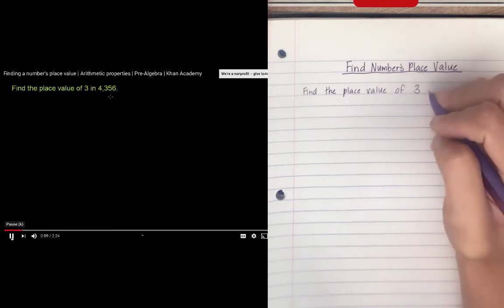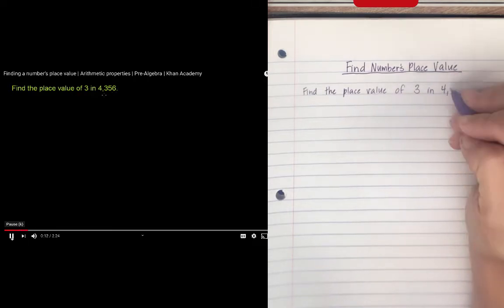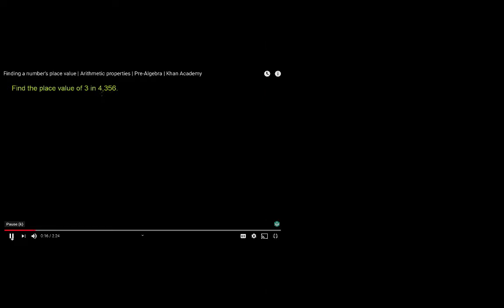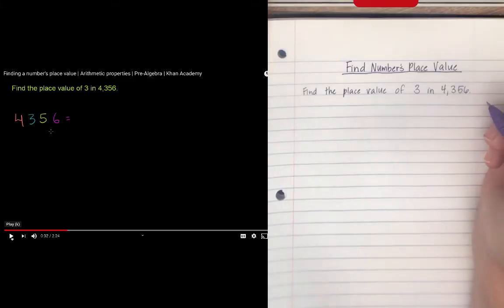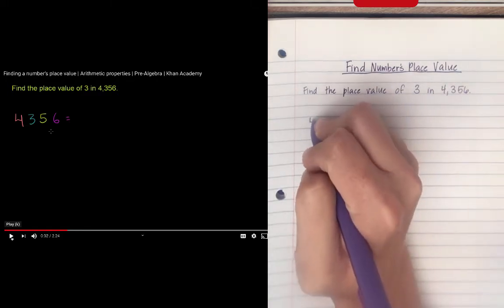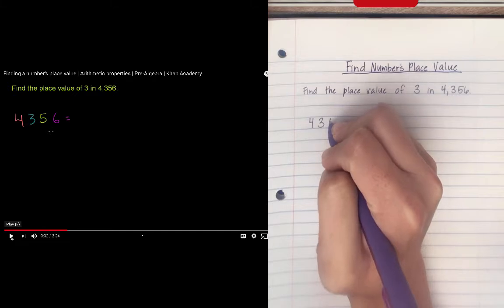Find the place value of 3 in 4,356. Now whenever I think about place value, and the more you do practice problems on this, it will become a little bit of second nature. But whenever I see a problem like this, I like to expand out what 4,356 really is. So let me rewrite the number. So 4,356 is equal to... What you're going to want to do is as you are watching the video, you want to pause it so that you can write down what is being written down in the video. So here I'm pausing it, and I'm going to write on my paper, 4,356 equals...